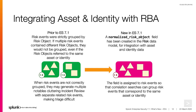Integrating assets and identities with RBA: prior to ES 7.1, risk events were strictly grouped by risk object. If multiple risk events contained different risk objects, they would not be grouped, even if the risk objects referred to the same asset or identity. When risk events are not correctly grouped, they may generate multiple notables cluttering incident review with separate but related risk events, making triage difficult. In ES 7.1, a normalized risk object field has been created in the risk data model for integrating assets and identity data. The field is assigned to risk events so that correlation searches can group risk events that correspond to the same asset or identity.